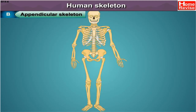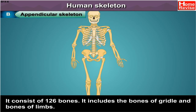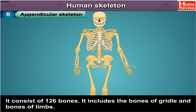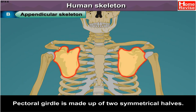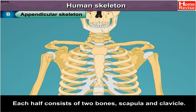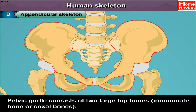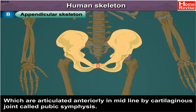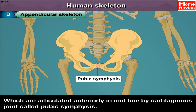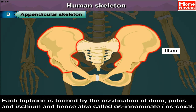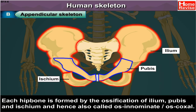The appendicular skeleton consists of 126 bones. It includes the bones of the girdles and bones of the limbs. The pectoral girdle is made up of two symmetrical halves, each consisting of two bones: scapula and clavicle. The pelvic girdle consists of two large hip bones, also called innominate bones or coxal bones, which are articulated anteriorly in the midline by a cartilaginous joint called the pubic symphysis. Each hip bone is formed by the ossification of ilium, pubis, and ischium, and is also called os innominate or os coxal.